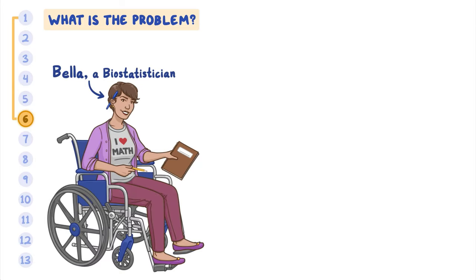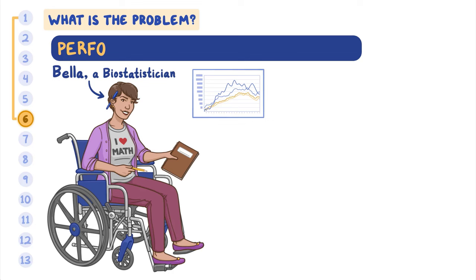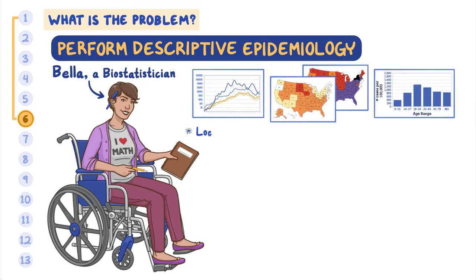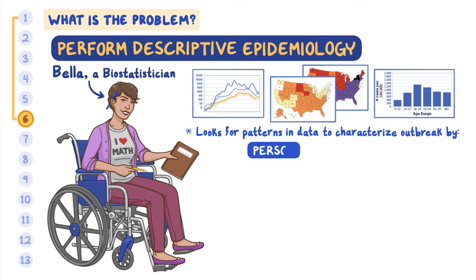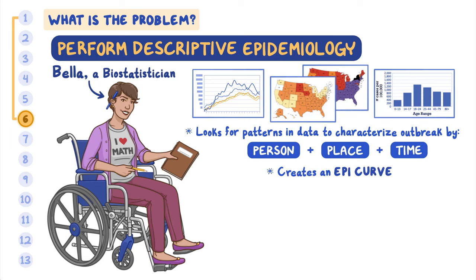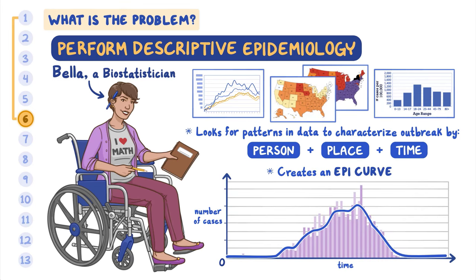Bella, the team's biostatistician, analyzes the line list data as she performs descriptive epidemiology. This means she is looking for patterns in the data to characterize or classify the outbreak by person — who was affected — place, where the cases occurred, and time, when they occurred. Bella also creates maps and tables to help the team identify patterns and trends of the disease. She also creates an epi curve, a histogram that displays the number of new cases over time. The team can then use this information to determine the extent of the outbreak, decide where to apply control measures, and identify clues to what the cause might be.